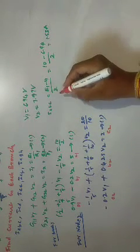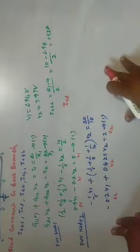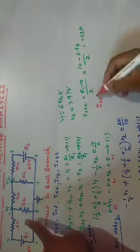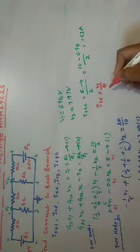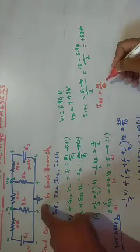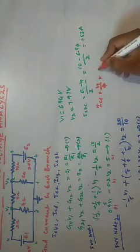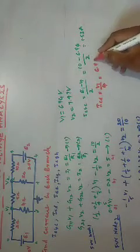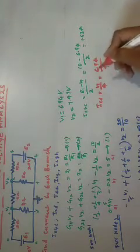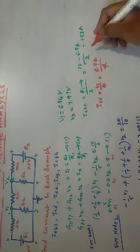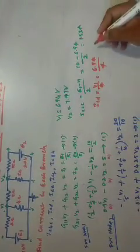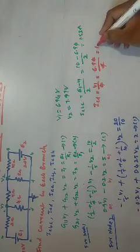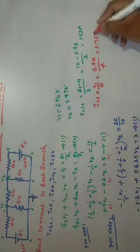And to find the current through ICD. That is this branch. That is nothing but V1 by 4. V1 is the voltage and next to another one it is 0. So it is V1 by 4. What is V1? We have found that. 6.94 divided by 4. And the current is 1.735 ampere.